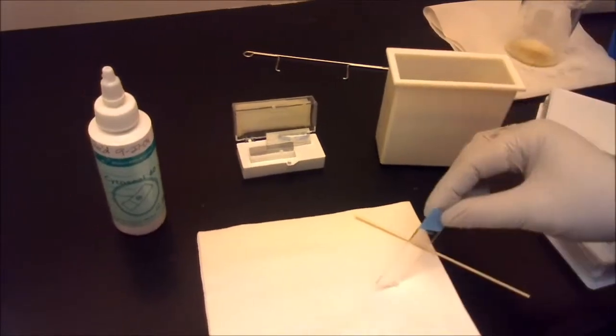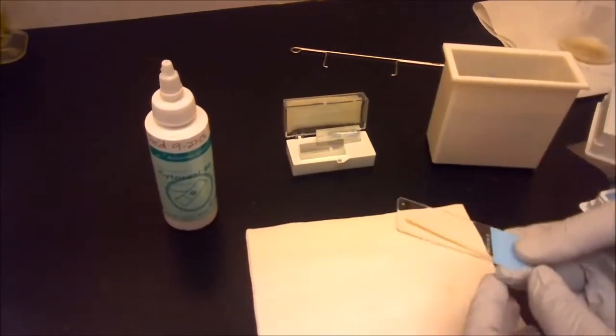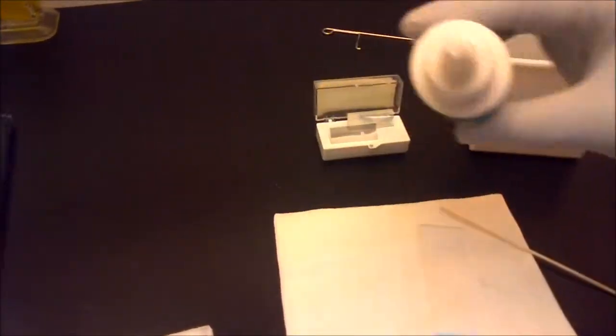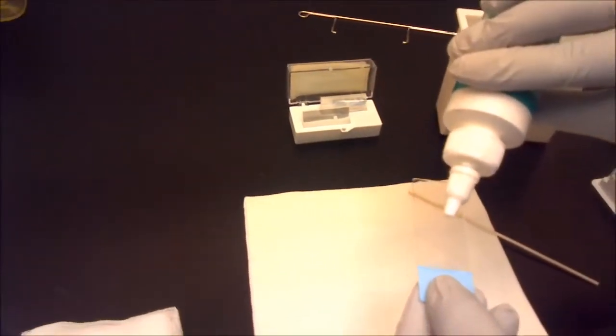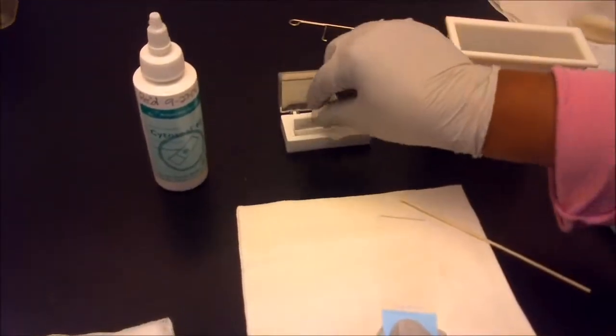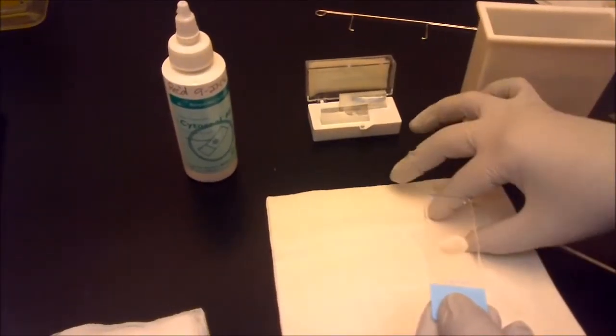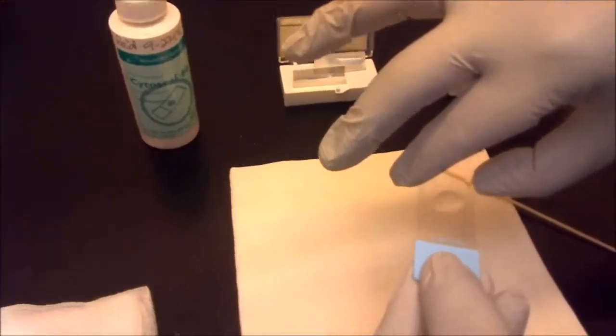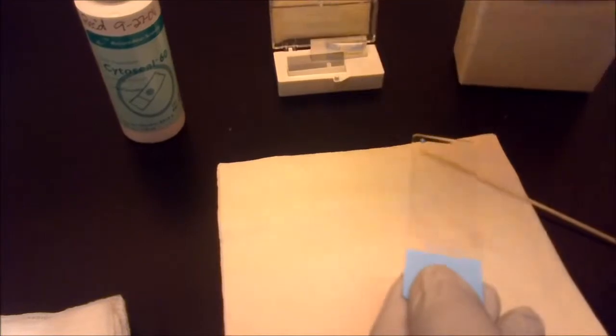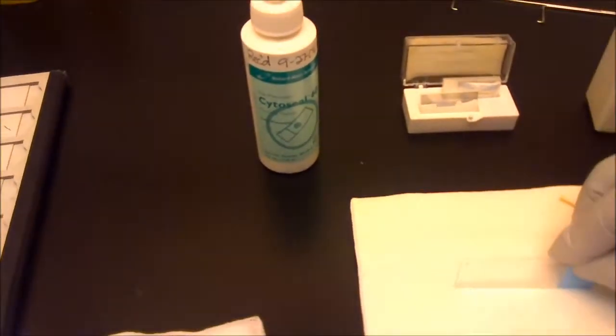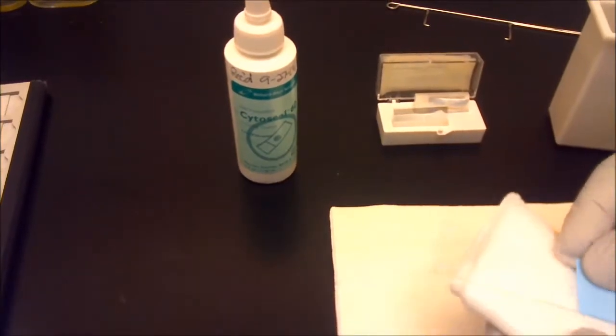Another technique of coverslipping is taking the slide, putting the mounting media—which is the cytosyl—on it. Then you take the cover glass and do it the same way we did the first time, from the bottom going up. Then you wipe the bottom with the gauze.